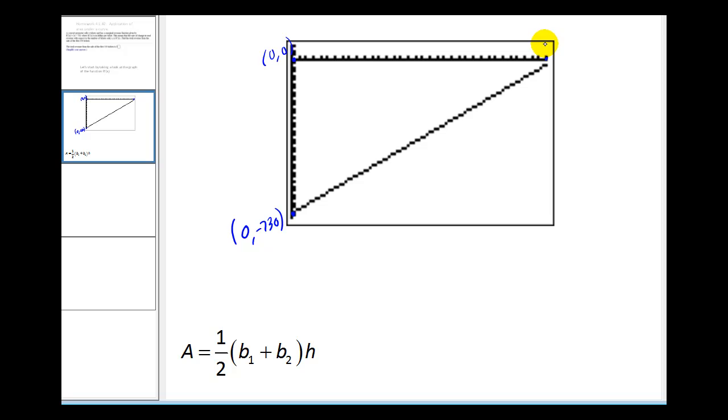This point here would be (350, 0), and this point here is (350, -30).